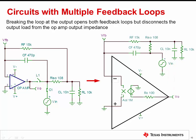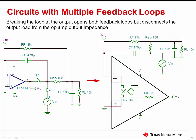However, breaking the loop in this location disconnects the output capacitive load CL from the op-amp output. Therefore, CL will not interact with the open loop output impedance RO, preventing the simulation from identifying possible stability issues caused by the capacitive load, as discussed in the previous video.